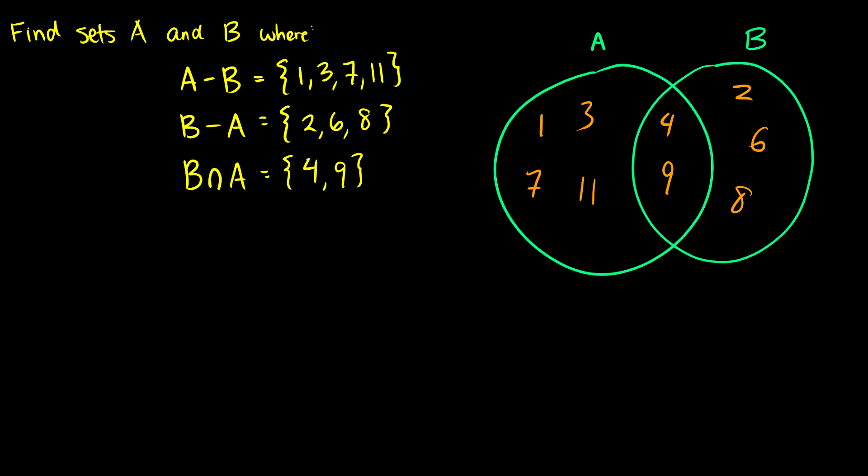So we can see that set A is going to be 1, 3, 4, 7, 9, and 11. Because remember, we include everything in its set. And the set B is going to contain 2, 4, 6, 8, and 9.